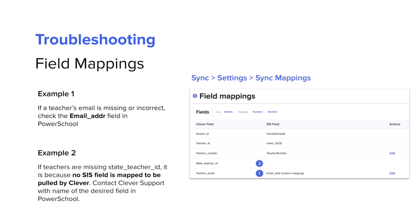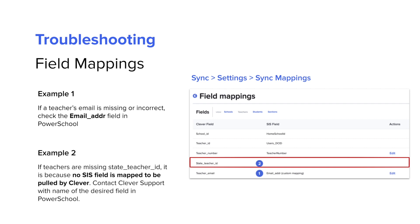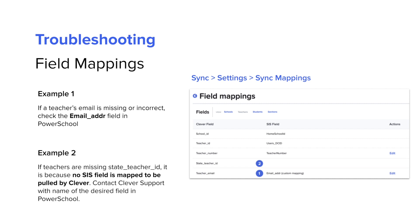If you are not sure what field in PowerSchool corresponds to a field in Clever, this information will be found on the Sync Settings page under Sync Mappings. For example, if a teacher's email was missing or incorrect, this district would want to look at the field named email_ADDR in PowerSchool and confirm that the email is correct for the teacher. In the second example, you can see that there is not a field in the SIS that is mapped to state teacher ID in Clever. As such, no teachers in Clever will have state ID populated. To populate this information, the district would want to contact Clever support with the name of the desired field from PowerSchool, and our support team will work with them to update the PowerSchool configuration to pull state ID data into Clever.